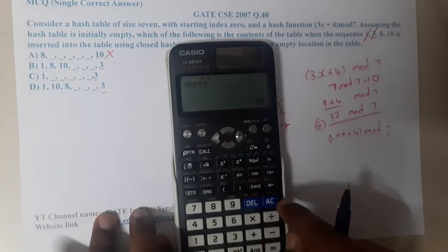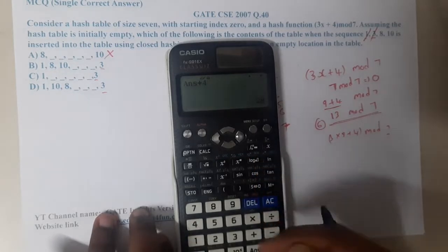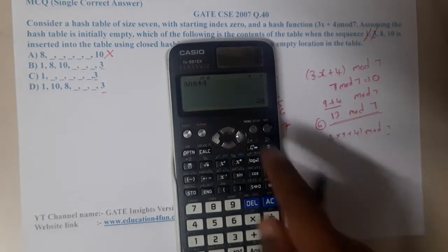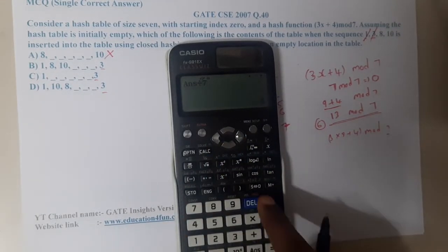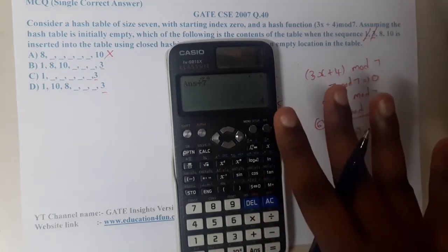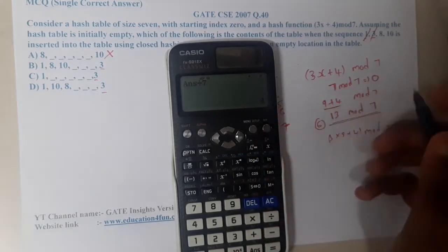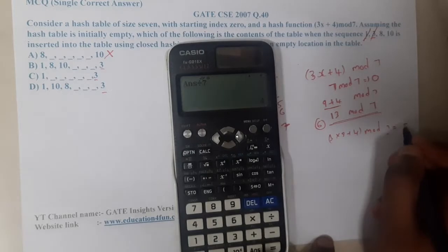We got 24, plus 4 equals 28. 28 mod 7: some might ask how to do mod in the calculator. Divide by 7. We got exactly 4, which means there is no remainder, so this mod value equals 0.